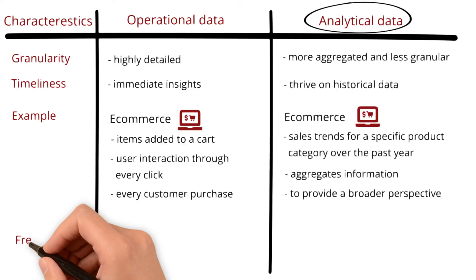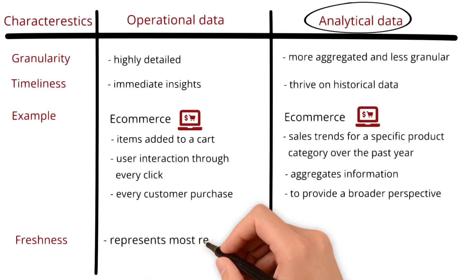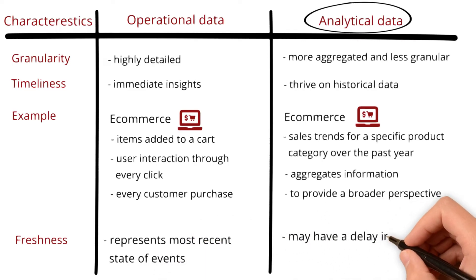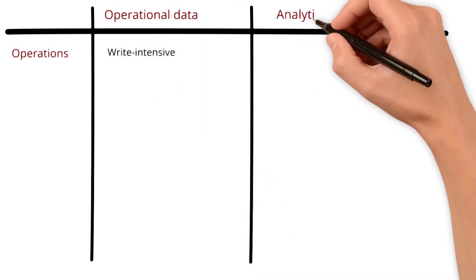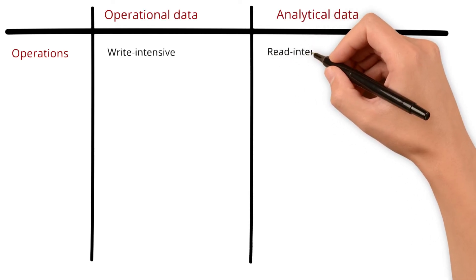Talking about freshness, operational data is typically fresh as it processes in real-time. It represents the most recent state of events, while analytical data may have a delay in its availability because it involves the processing of large datasets of historical data. Moving to the next characteristic, operational data is optimized for write-intensive operations, while analytical data is for read-intensive operations.